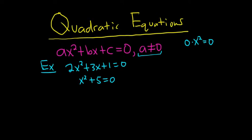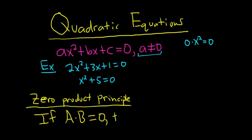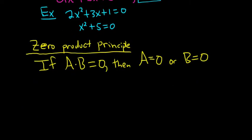There are various ways to solve quadratic equations. The first way is by factoring. In order to solve a quadratic equation by factoring, you have to use something called the zero product principle. The zero product principle basically says if you have a times b equal to 0, then a is 0 or b is 0. Let's do a really simple example of using this, and we'll talk about it because it's actually pretty deep.